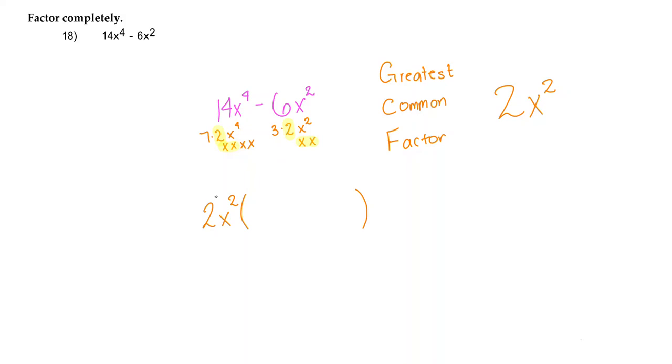So 14x to the 4th divided by 2x squared, and I'll even write that over here on the side. So 14x to the 4th divided by 2x squared is 7x to the 2nd power. And then I'm going to bring down this negative. 6x squared divided by 2x squared is 3, just 3.